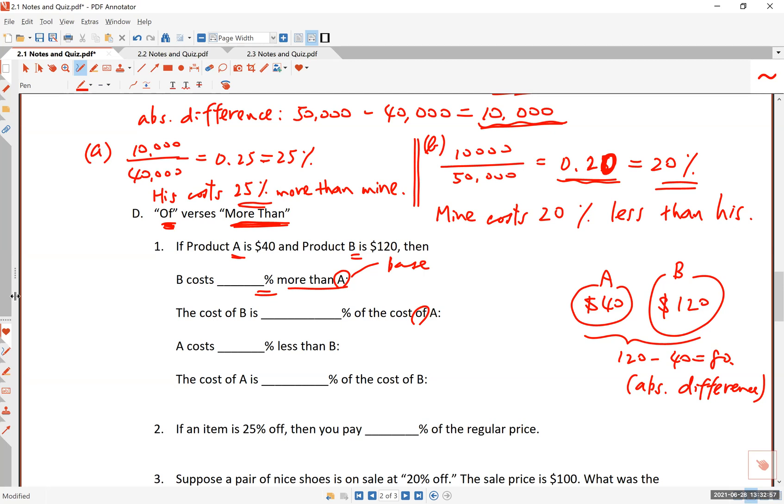So B costs what percent more than A? Well, more than means that A is the base number. So you can always, always identify the base number because it is preceded, preceded by the words like than or of. So anytime you see the word than or of, what follows is the reference number or the base number. And that's something that you may want to keep in mind. So B costs what more than A? So for this one, you divide the relative difference, sorry, the absolute difference, 80, by 40, the reference number. And the answer is 2.